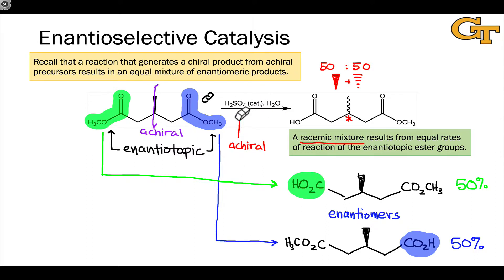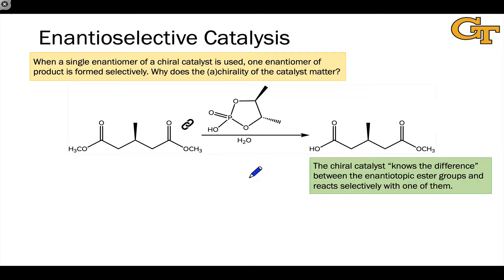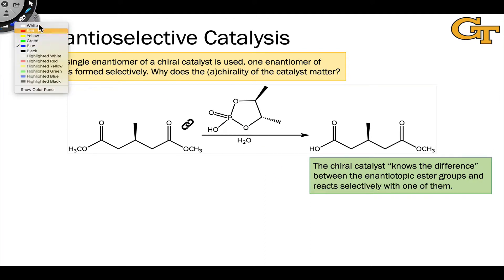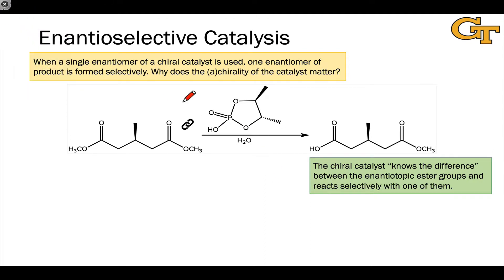The situation changes dramatically when we turn the acid into a chiral catalyst — in other words, when we introduce a stereocenter so that the overall structure lacks a plane of symmetry. For example, we can take achiral sulfuric acid and turn it into a phosphoric acid derivative with a chiral structure: two stereocenters, no plane of symmetry. The catalyst is now chiral.